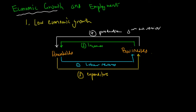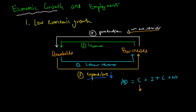What happens if economic growth is low? Something must have triggered this — we'll assume that confidence is very low. Because confidence is low, expenditure is going to decrease. As we know, aggregate demand is C plus I plus G plus net exports, so when confidence is low, consumer spending decreases, and therefore expenditure decreases. Businesses have no incentive to produce because supply ends up in excess of demand, as we can see by analysing a supply and demand graph.